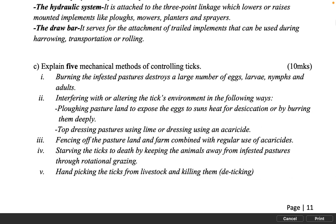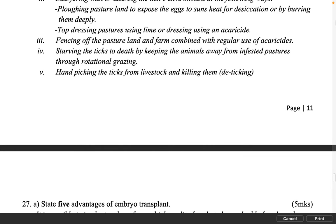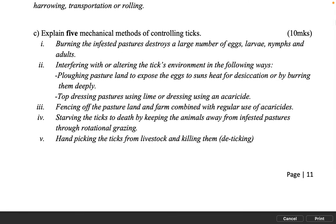Explain five mechanical methods of controlling ticks. 10 marks. Burning the infested pastures destroys a large number of eggs, larvae, nymphs and adults. Interfering with or altering the tick's environment: plowing pasture land to expose the eggs to the sun's heat for desiccation or by burying them deeply. Top dressing pastures using lime or dressing using an acaricide. Fencing off the pasture land and farm combined with regular use of acaricides. Starving the ticks to death by keeping the animals away from infested pastures through rotational grazing. Hand picking the ticks from livestock and killing them (de-ticking).